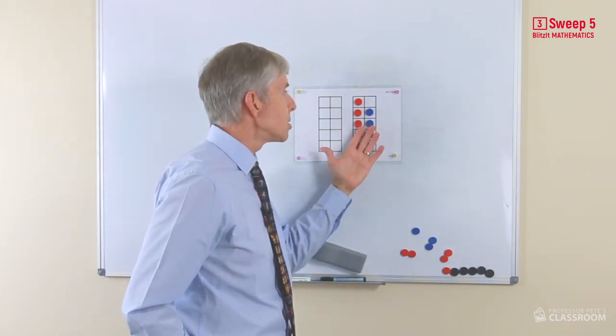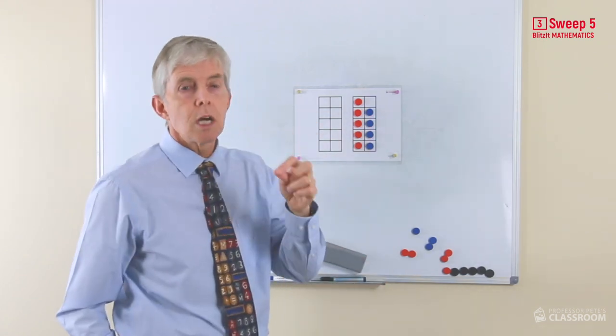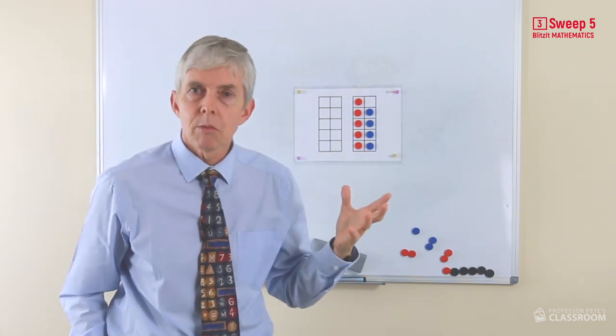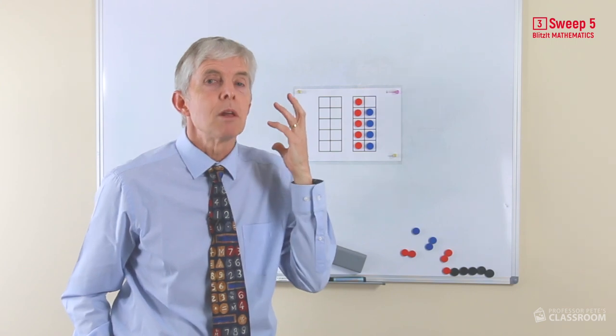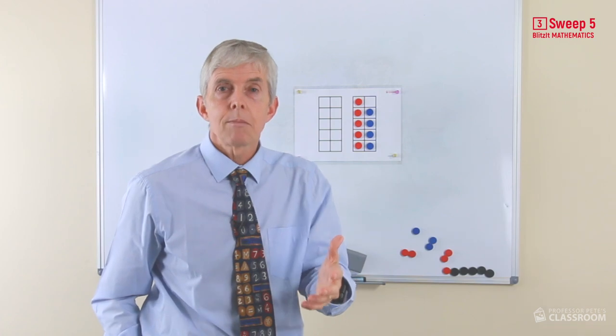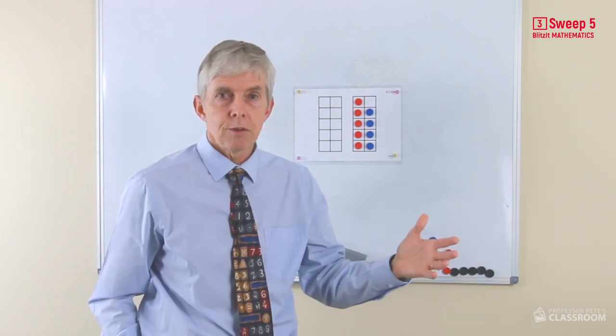So we're going to help our students see that if you know the double, if you know all the doubles and you're adding one extra one, then that's going to be an easy number fact to do. So eight plus seven, which is one of the hardest addition number facts we've got. If you just know double seven is fourteen, eight plus seven is simple, it's fifteen.